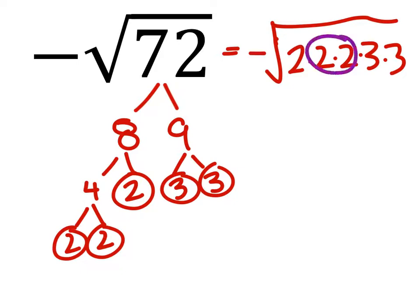We've got these pairs of numbers, I've got this pair of 2's and this pair of 3's, right? So I have a negative 2 times a 3 times the square root of 2.